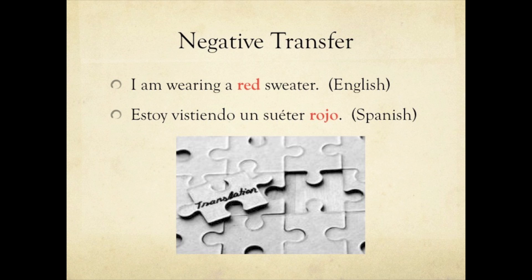Negative transfer is when something that is learned in one situation hinders your ability to perform in another situation. This type of transfer can be avoided if differences between two objects or things are stressed and any similarities are not highlighted.